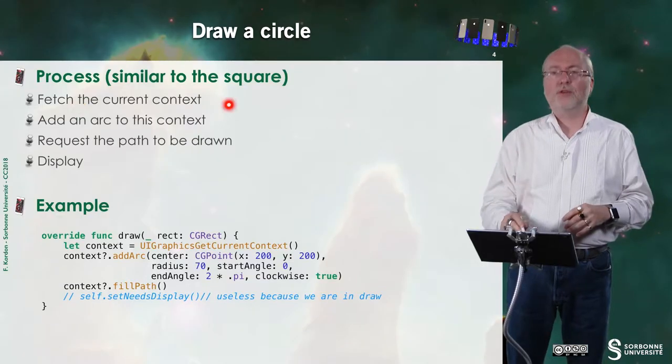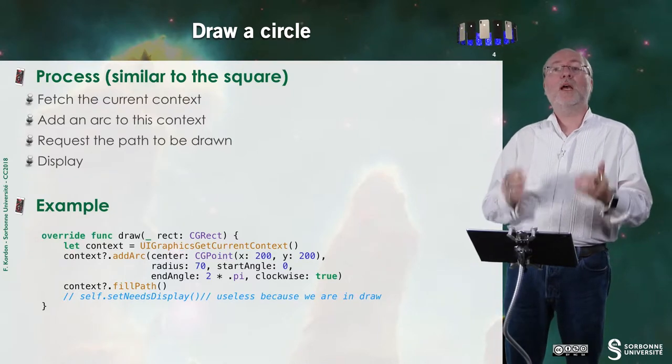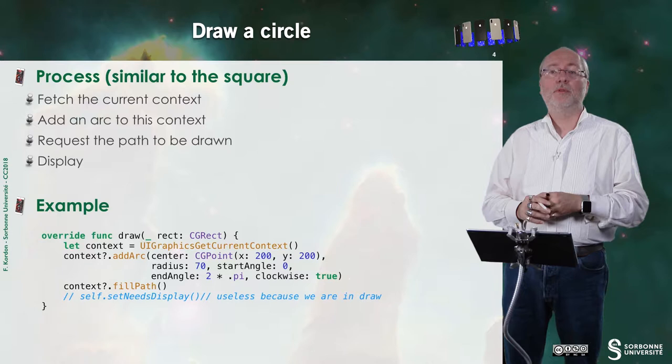To draw a circle, it's similar. You fetch the current context, but here you add an arc to this context, and you request the path to be drawn.